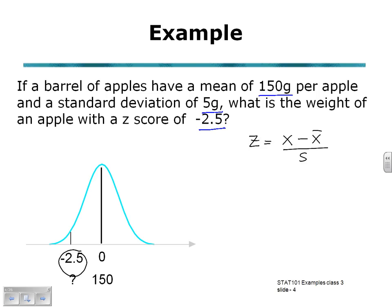Our Z-score this time is negative 2.5. Remembering to leave the negative sign there. Equals X that we're interested in, taking away the mean X bar which is 150, and dividing by our sample standard deviation once again is 5.